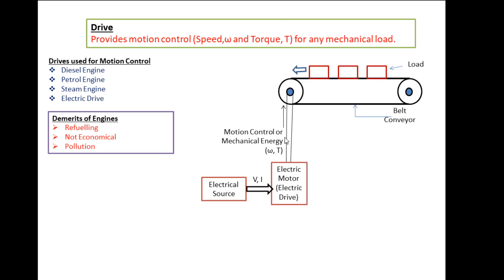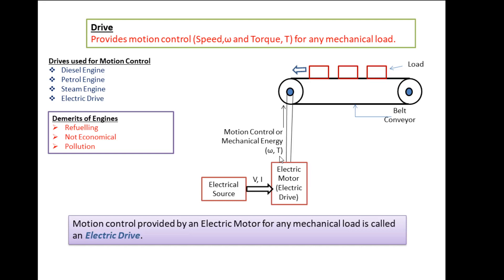The function of the electric motor is to convert electrical energy in the form of voltage and current into mechanical energy in the form of speed and torque. The value of speed and torque depends on the value of voltage and current. If we change the electrical input energy — either voltage or current — the mechanical output energy (speed and torque) changes accordingly. So an electric drive is one which provides motion control using an electric motor for any mechanical load.